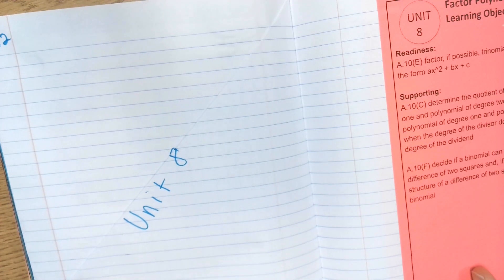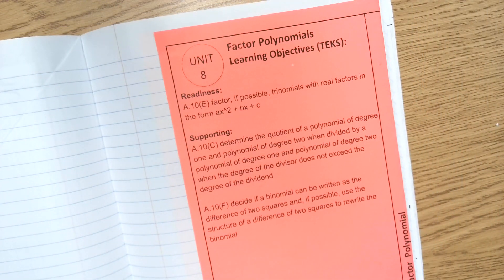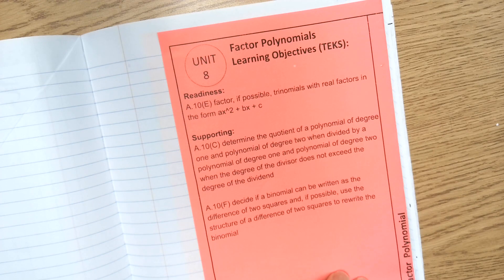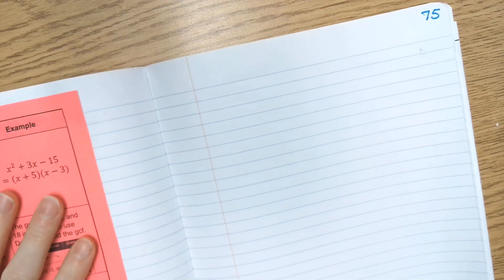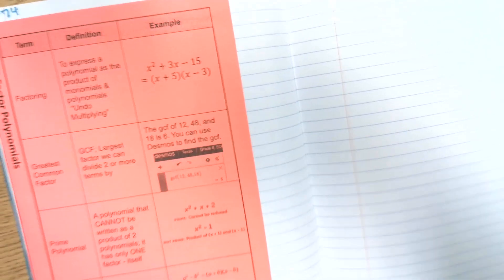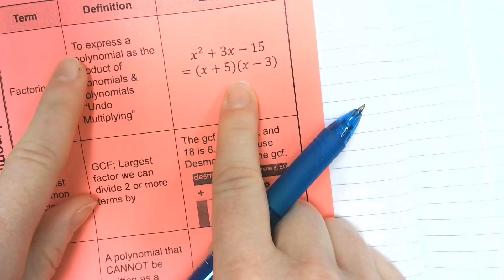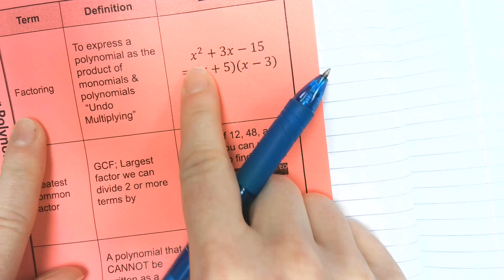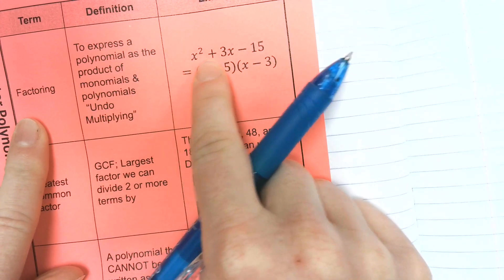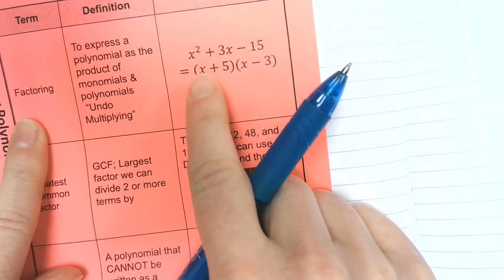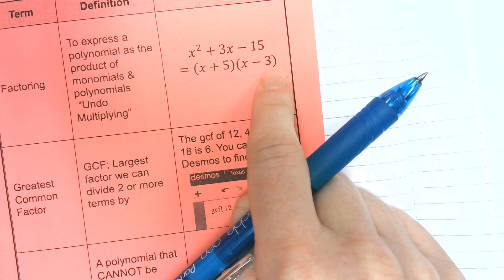We are going to go ahead and get started. This unit is all about factoring. So in order to factor, we need to talk about factors. Factors are numbers that evenly divide certain numbers or variables. If you look at your unit divider, this is the gist of what we're doing — we are factoring. Instead of being given two binomials and being asked to multiply, we're going to be given the trinomial and be asked to go backward and find what are the two binomials that multiply together to get that.